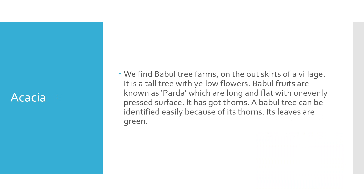The next one is Acacia or Bubble Tree. We find Bubble Tree farms on the outskirts of the village. It is a tall tree with yellow flowers. Bubble fruits are known as Parda, which are long and flat with an unevenly pressed surface. It has got thorns, and the Bubble Tree can be identified easily because of them. Green sticks of Bubble Tree are used as a toothbrush. Its juice is bitter in taste and very effective in cleaning bacteria. It strengthens the gums. The gum obtained from the Bubble Tree is very good for health as it provides energy. The leaves, skin, fruit, wood and gum obtained from the Bubble Tree are all very useful to us.